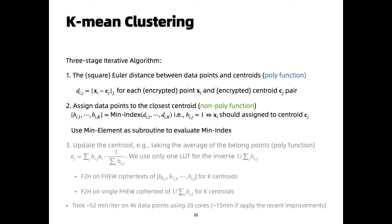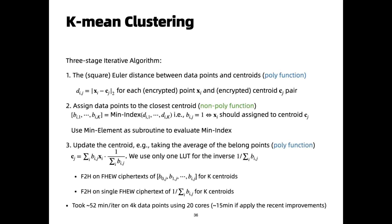The previous case needed no switching between HEAN and FHEW. We now show a different case: doing K-means clustering on encrypted data points. K-means clustering is an iterative algorithm. In each update, we first calculate the squared distance between each data point and the centroids — this step can be done using a polynomial function. Then we assign data points to their closest centroid using argmin, a non-polynomial function, at which point H2F kicks in. The argmin gives us a sequence of binary values indicating which centroid to assign to. Finally, we update each centroid using the average of assigned data points. To take the average, we need F2H to switch FHEW back to HEAN. After F2H, we can update the centroid using homomorphic multiplication on HEAN ciphertexts. Empirically, we can perform one update on 4K data points within 52 minutes using 20 machine cores.